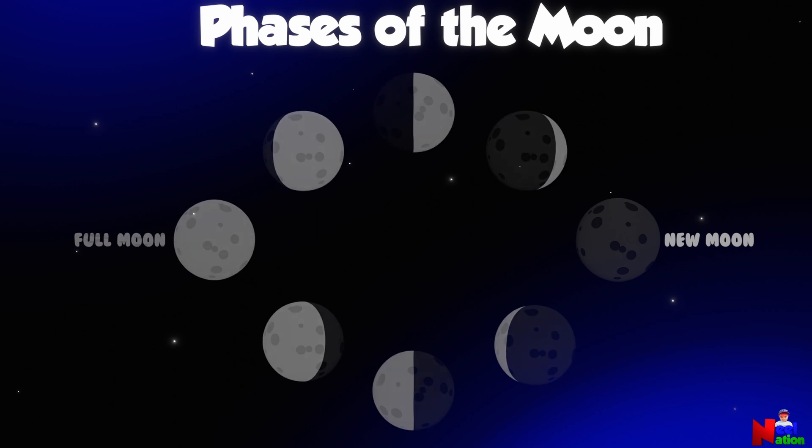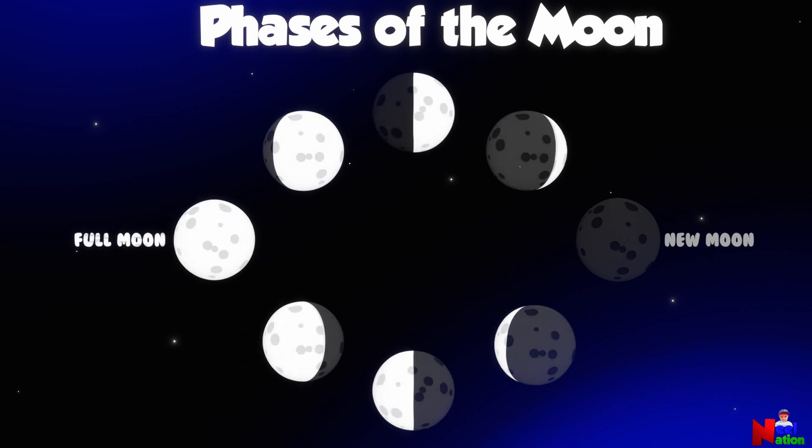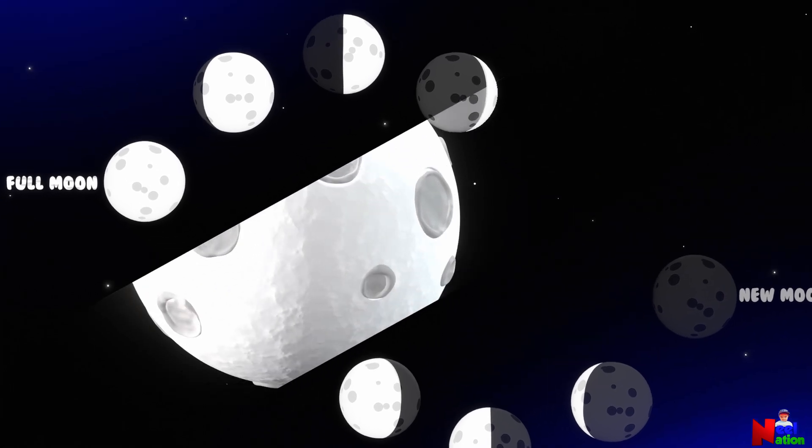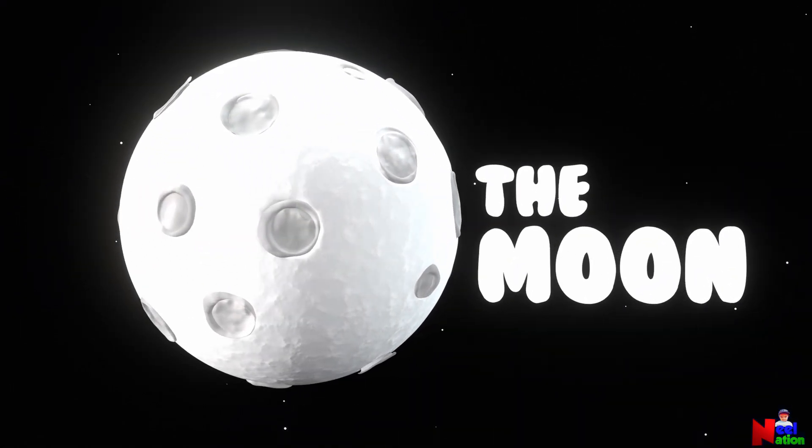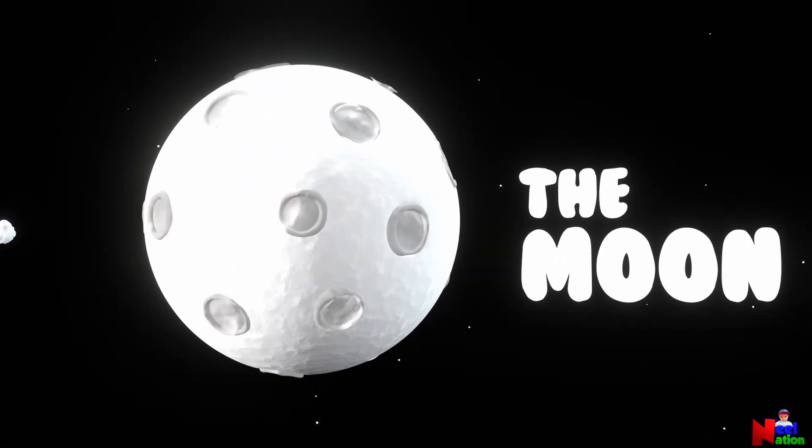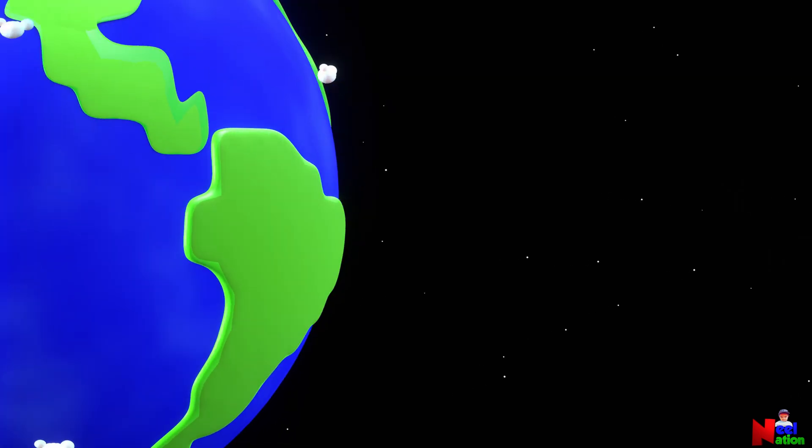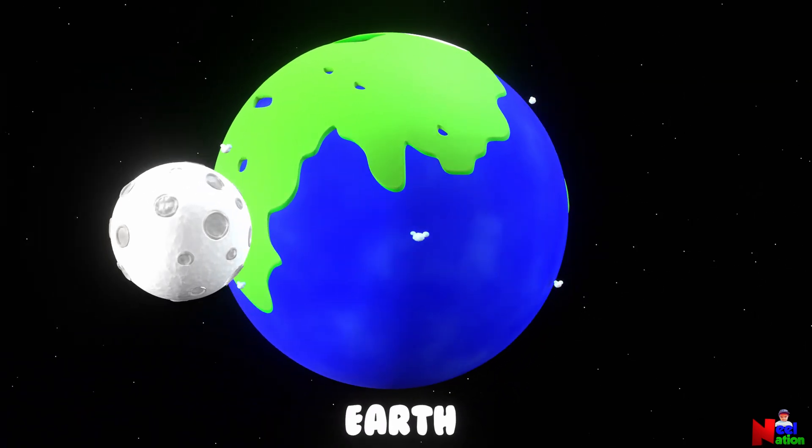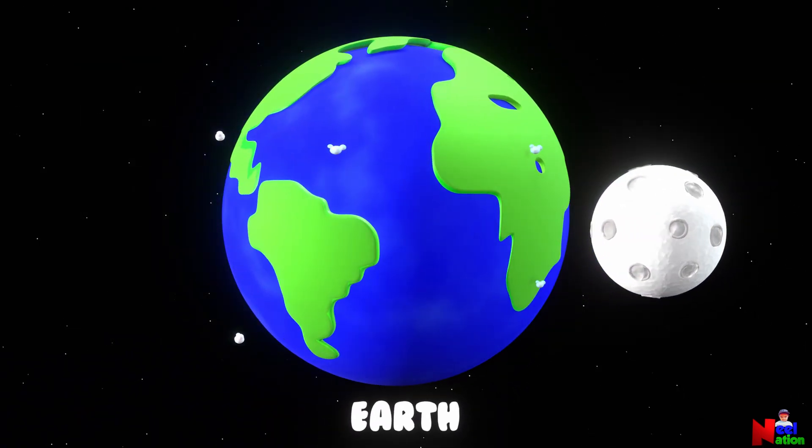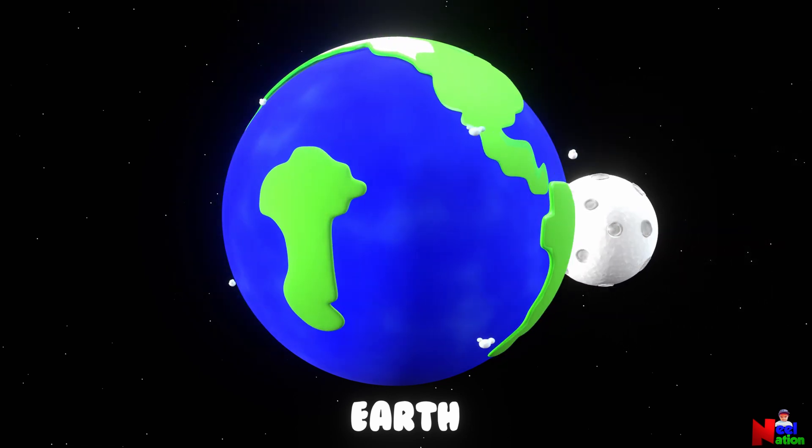How does it happen? Okay, let's find out. The moon is a rocky sphere and the moon is Earth's closest neighbor in space. The moon goes around the Earth in an oval shaped path.